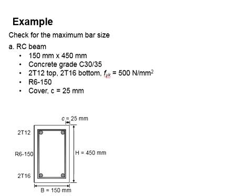Let us try an example to determine the maximum bar size of a reinforced concrete beam. The beam size is 150 times 450. The concrete grade is 30.